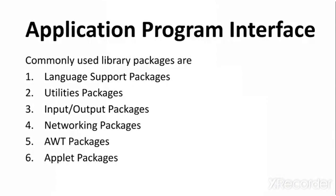Similar to library functions in C language, Java has built-in library packages. A package is a collection of similar classes and methods. In Java, these packages are of six types: language support packages, utility packages, input/output packages, networking packages, AWT packages, and applet packages.